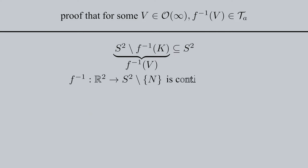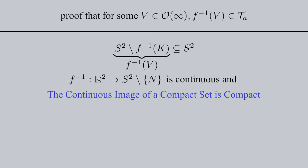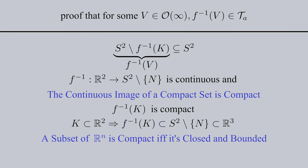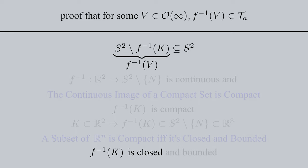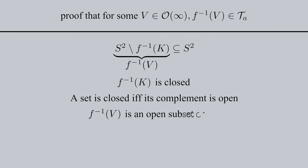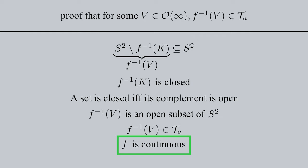We know that F inverse as a map from R2 to the punctured sphere is continuous, and it turns out that the continuous image of a compact set is compact. This means that F inverse of K is compact. K being a proper subset of R2 implies that the preimage of K is a subset of the punctured sphere, which is a subset of R3. Ultimately, F inverse of K is a subset of R3. And from Heine-Borel, we know that in Euclidean space Rn, compact sets are also closed and bounded. This means that F inverse of K is closed and bounded. What's most important is that F inverse of K is closed, because a set is closed precisely if its complement is open. So this makes our preimage an open subset of S2 since it's the complement of a closed set. In other words, our preimage is an element of tau A, and this implies that F is continuous. Awesome, we proved continuity at the north pole.